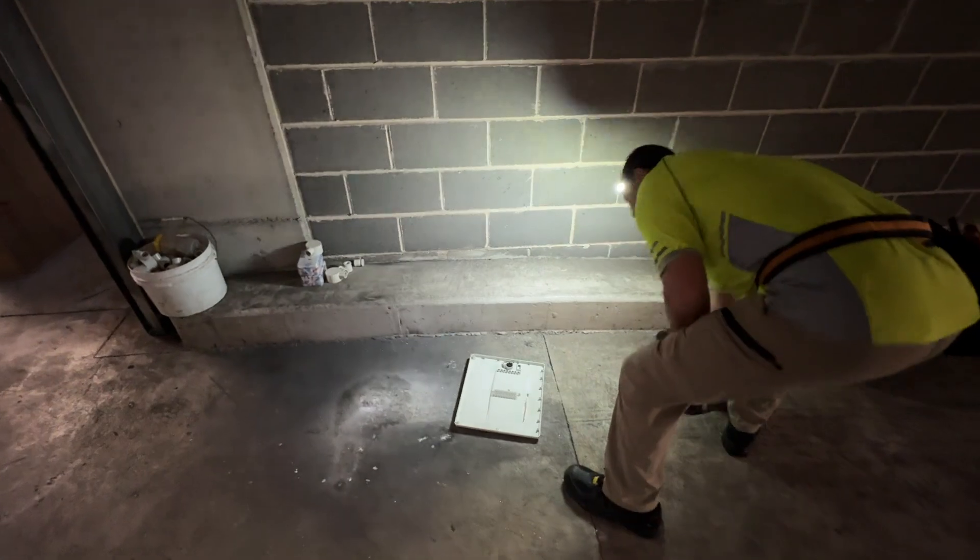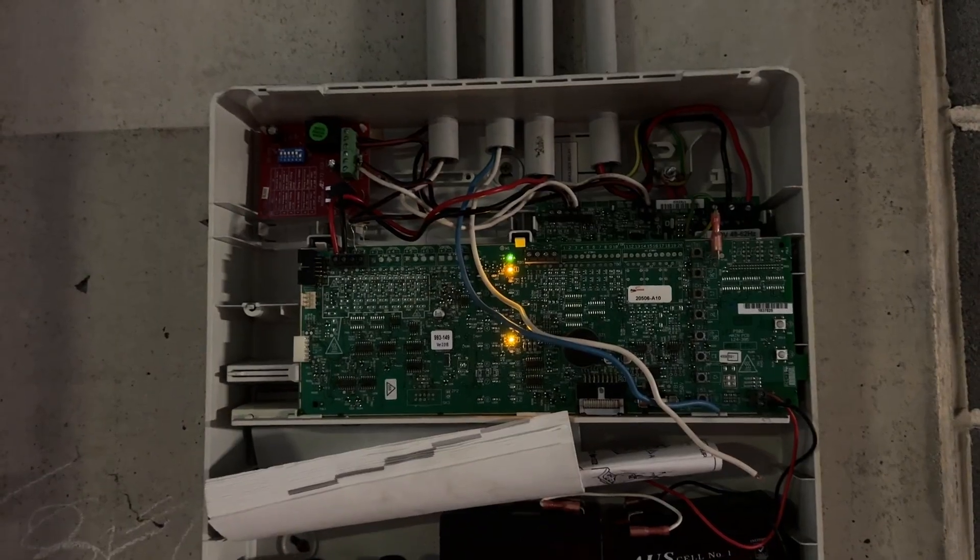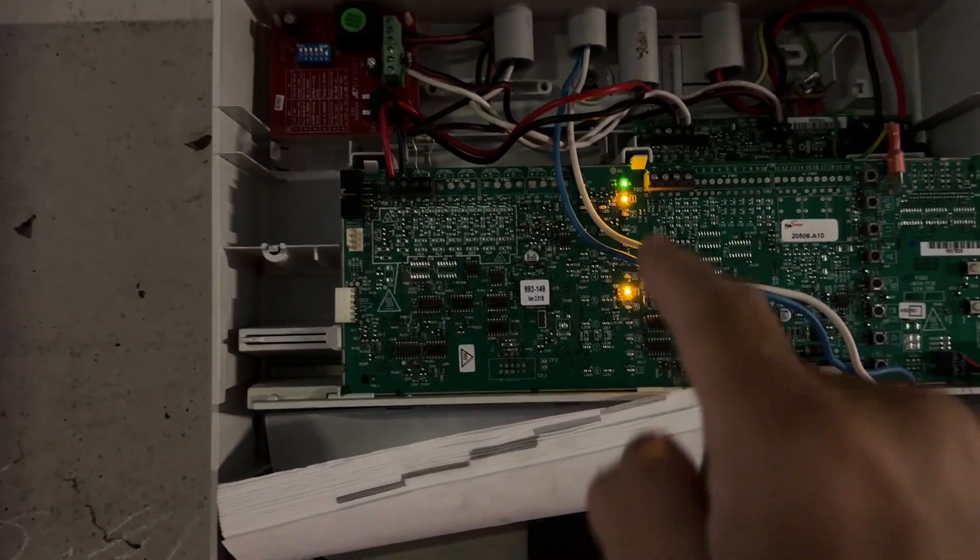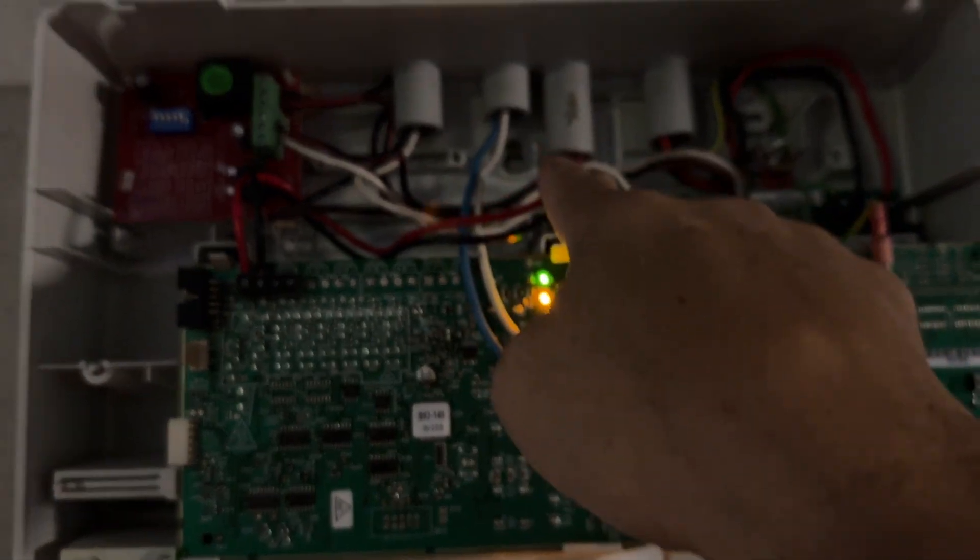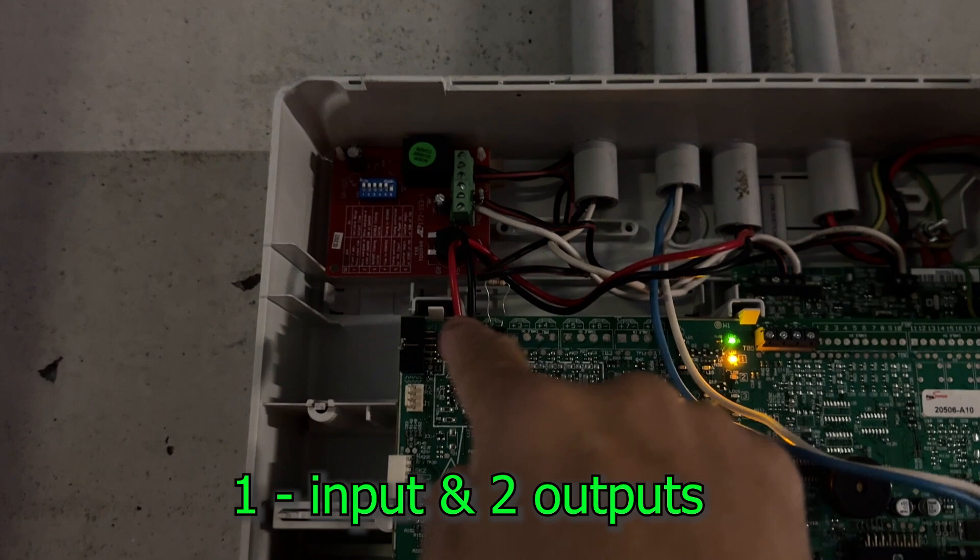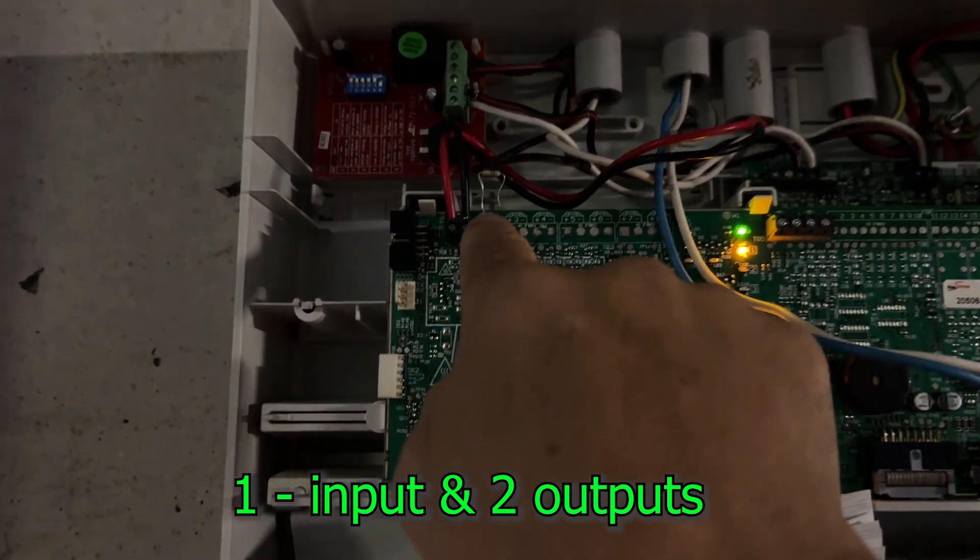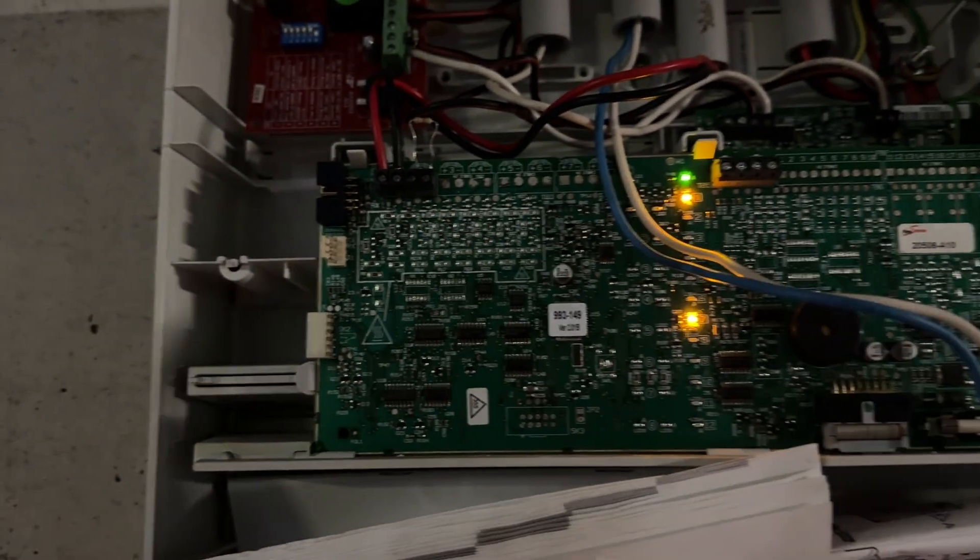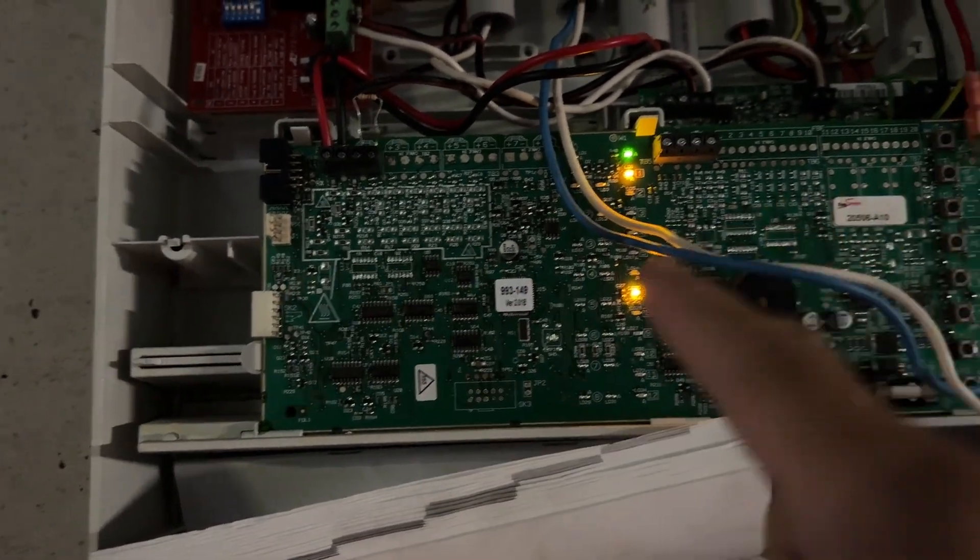In this system you got one, two, three inputs, by one input and two outputs. So you have a detector, that's the detector, EOL resistor there, that's the two zone card, two zone fire panel.